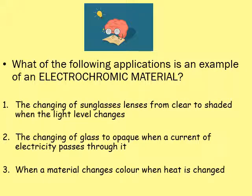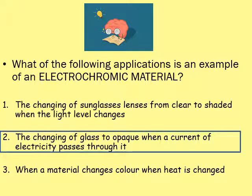Same again — another multiple choice question. Which of the following applications is an example of an electrochromic material? Pause it and give yourself up to five minutes. The answer is the changing of glass to opaque when a current of electricity passes through it. If you look at the word electrochromic, you know the material is something to do with electricity, which could have helped you answer that question.